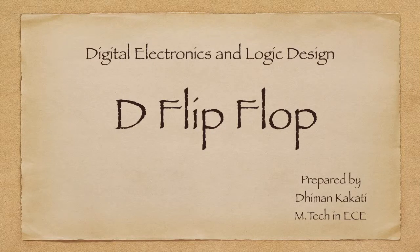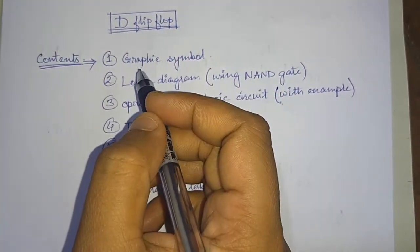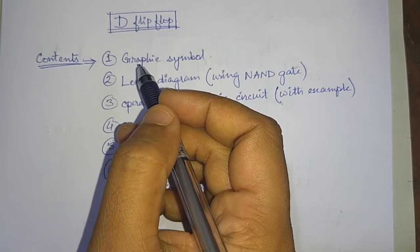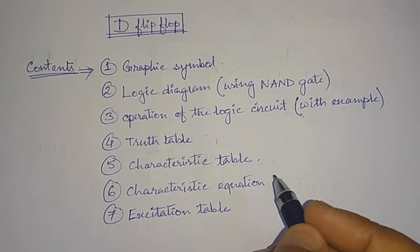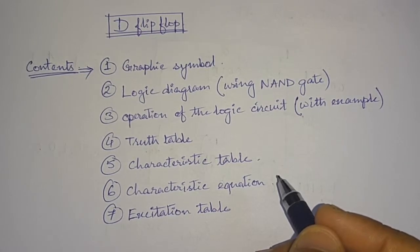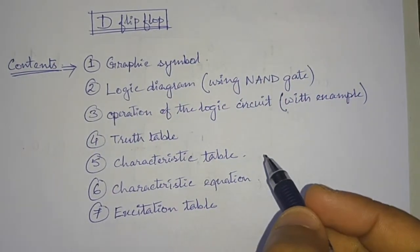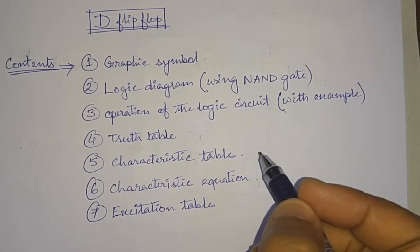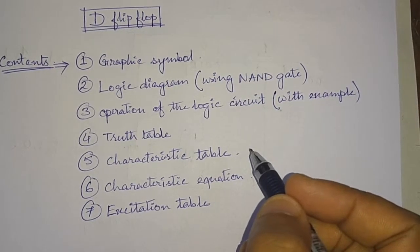Dear students, welcome to this digital electronics lecture series. In this tutorial we will learn about the D flip-flop. In a previous video we saw about D latches. The basic difference between the latch and the flip-flop is that in a latch we have an enable signal, and whenever the enable signal is high the output changes. In the D flip-flop we use a clock signal instead of an enable signal. The flip-flop operates either at the positive edge or the negative edge, depending on our requirement.